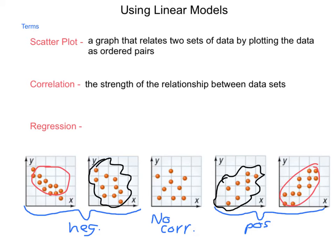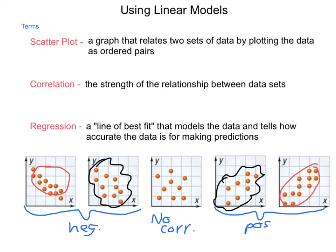Overall, with all this, we can also talk about the regression of a data set. And when we talk about regression, we're talking about a line of best fit that models the data and tells how accurate the data is for making predictions, or how accurate that line is.